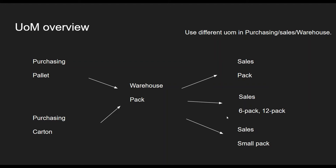A typical business scenario would be an item sold in different types — you can send it as a package, a six pack, or a 12 pack, or a small pack of six papers. But you are buying it as a pallet or carton and storing it as just the package — the big boxes of paper. So we are using different UoMs in different ways: in purchasing we use one, in sales we use another, and in the warehouse we use a different one. We're going to mimic all this behavior in SAP Business One and understand the logic behind how we can convert one UoM to another and the relationship between them.